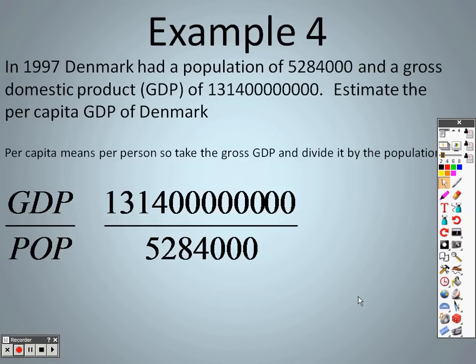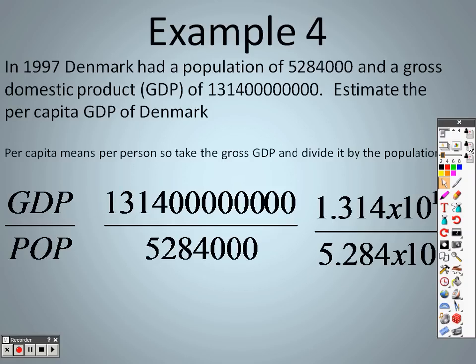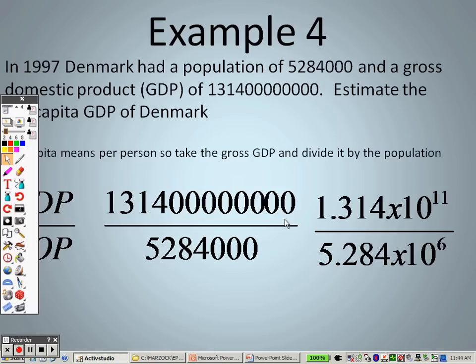You can simply just divide this, but we're doing this problem so you can see how we can use properties of exponents to maybe make this a little simpler to possibly try to do in your head. What we're going to do is we're going to rewrite the top and the bottom in scientific notation. When we're rewriting this, take a look here. If I move this 1, 2, 3, 4, 5, 6, 7, 8, 9, 10, 11 spots, that's where we're getting the 11 from. I put the decimal point, because whenever you do scientific notation, the decimal point goes in between the first and the second number. That's why I have 1.314. And I moved 11 spots. This one I moved 1, 2, 3, 4, 5, 6 spots. That's where the 6 comes from. This is 5.284.